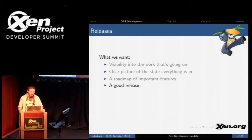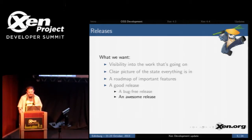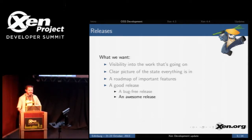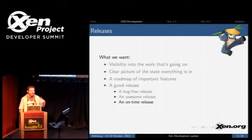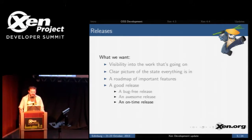We also want good releases. A good release is defined by three factors. First, it should be bug-free. Second, it should be awesome — having good features, fast performance, all the things that make Xen great. Third, and less important than the other two, it should be on time. That's the order in which we evaluate things: bug-free first, awesome second, on time third.